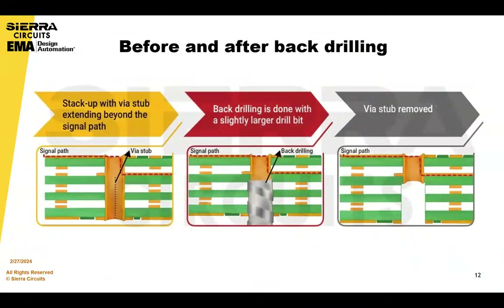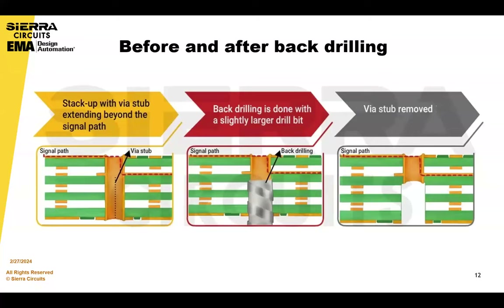This is the before and after for back drilling. On the left you have an example of the via stub — it's a drill hole with plating in the via. Then the back drill happens, and you get the pigtail situation that Steve Carney was talking about in terms of removing the stub. This is basically the before and after of back drill.